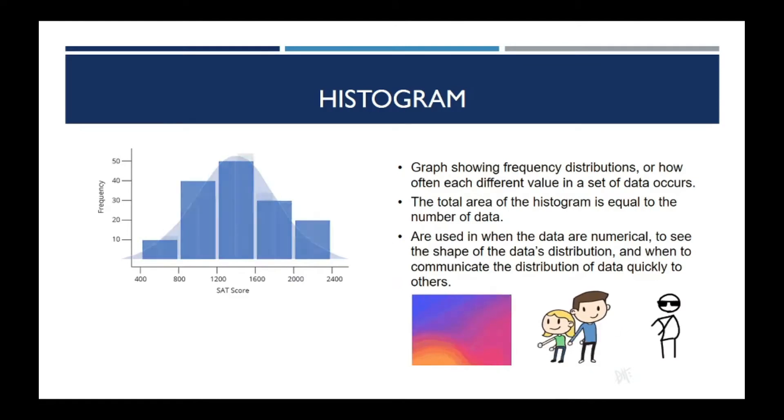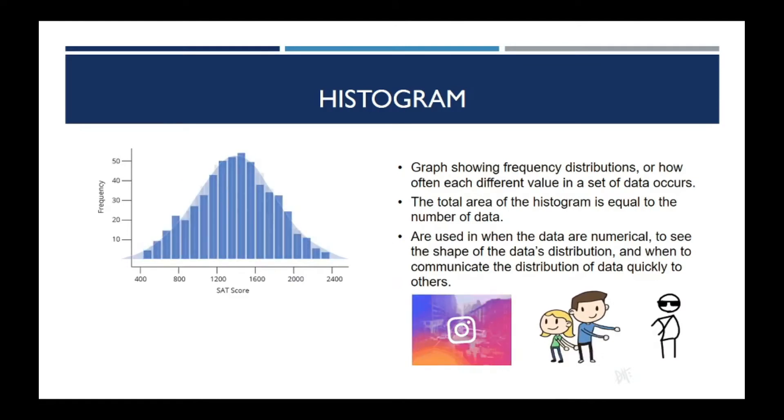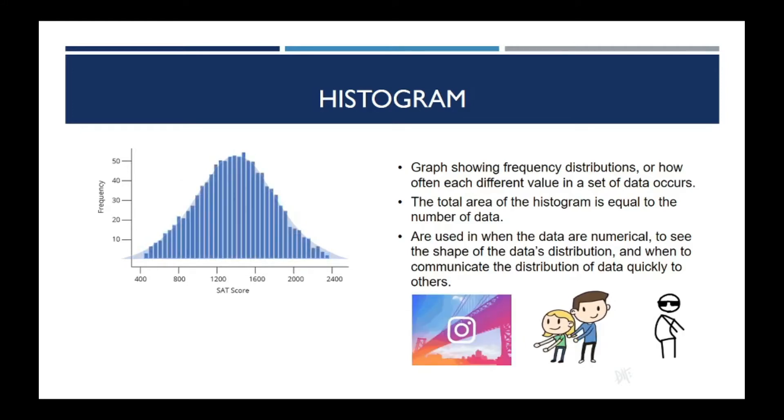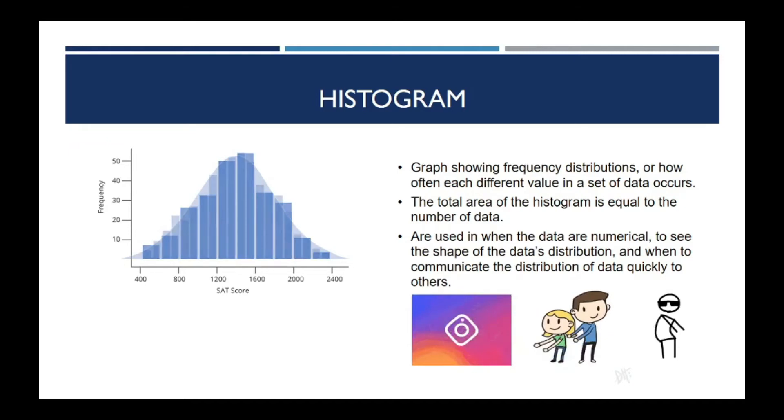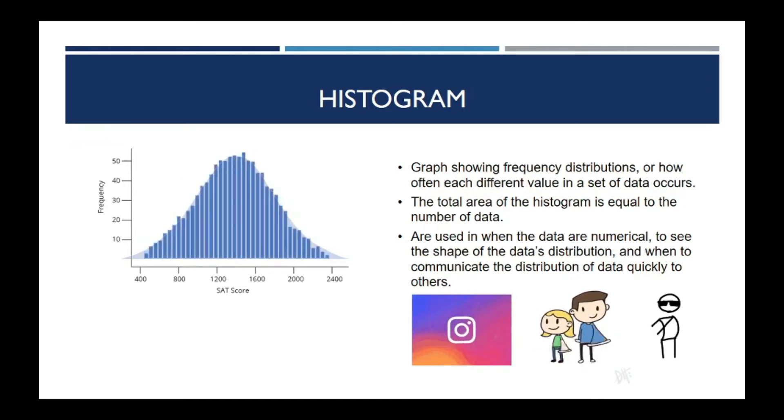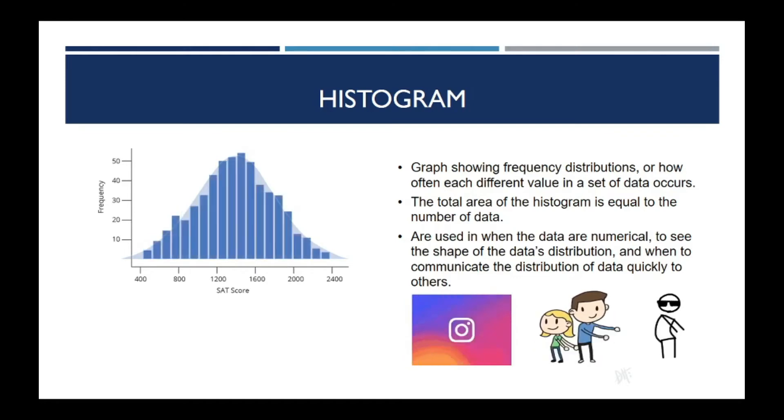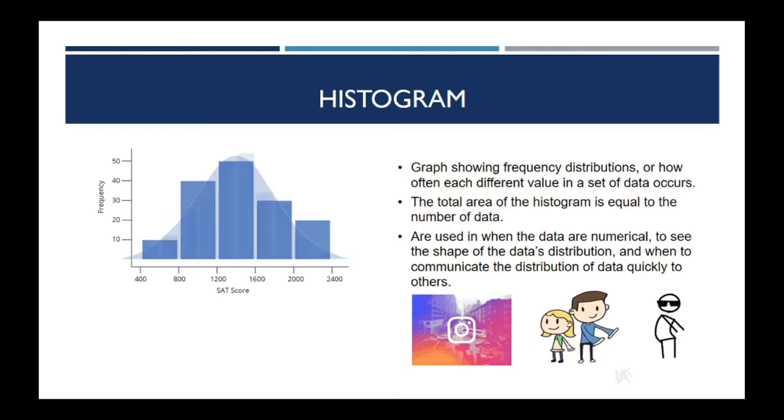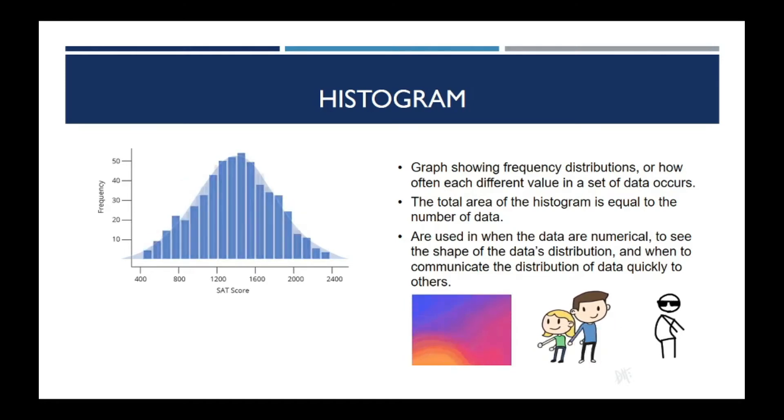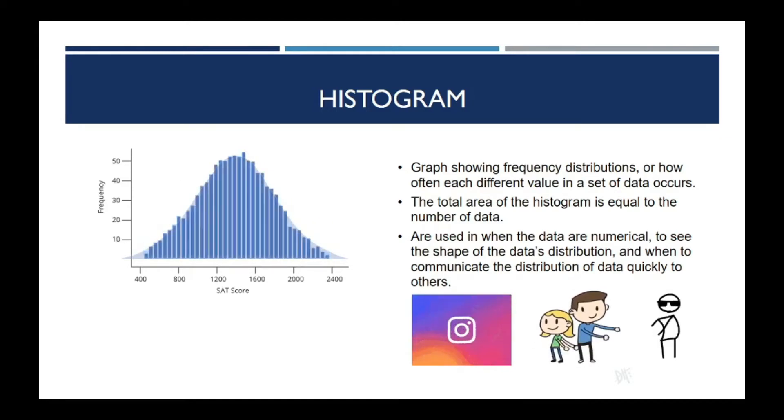Histogram is a graph showing frequency distributions, or how often each different value in a set of data occurs. The total area of the histogram is equal to the number of data. Histograms are used when the data are numerical to see the shape of the data's distribution and to communicate the distribution of data quickly to others. Histogram is not Instagram.